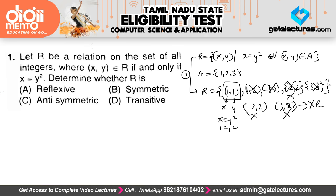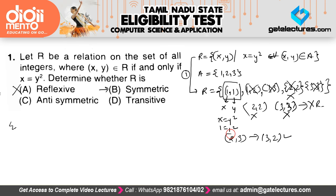Since only 1 comma 1 exists and 2 comma 2 and 3 comma 3 are not present, we cannot say this relation is reflexive. So the first option — asking whether it is reflexive or symmetric — is wrong because it is not reflexive. For symmetry, if 2 comma 3 were present then 3 comma 2 should also be present, but here none of those existed, so it vacuously satisfies the symmetric condition. From this first example it seems symmetric, but I'm not sure, so we eliminate the first option.